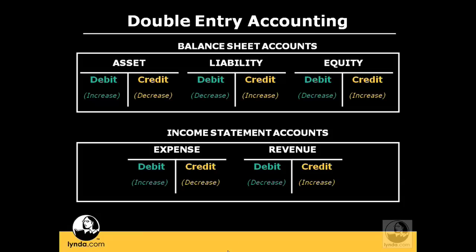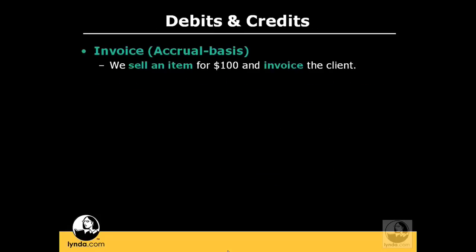Let's look at an example of a transaction you would post in QuickBooks. We're going to sell an item for $100 and invoice the client. The client is going to pay us later for this sale. This is called accrual-based accounting, which we're going to discuss in the next movie in detail. The idea behind accrual-based accounting is you sell the item today and the client pays you later. You book the revenue and earn it today because the client has received their product, but they're going to pay you at a later date.